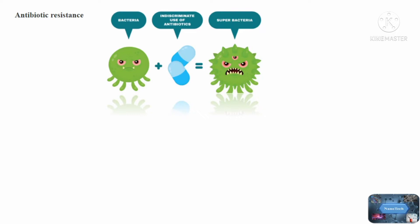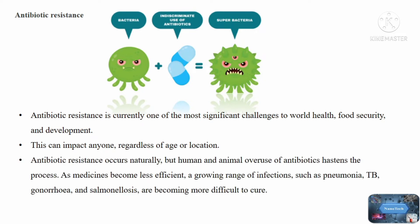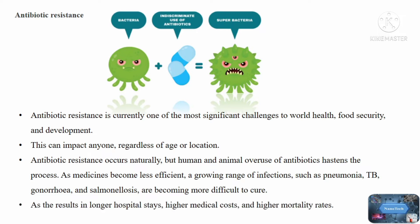Antibiotics and other antimicrobial medications become ineffective as a result of drug resistance, and illnesses become more difficult or impossible to treat. This can impact anyone, regardless of age or location. Antibiotic resistance occurs naturally, but human and animal overuse of antibiotics hastens the process. As medicines become less efficient, a growing range of infections such as pneumonia, TB, gonorrhoea, and salmonellosis are becoming more difficult to cure, resulting in longer hospital stays, higher medical costs, and higher mortality rates.